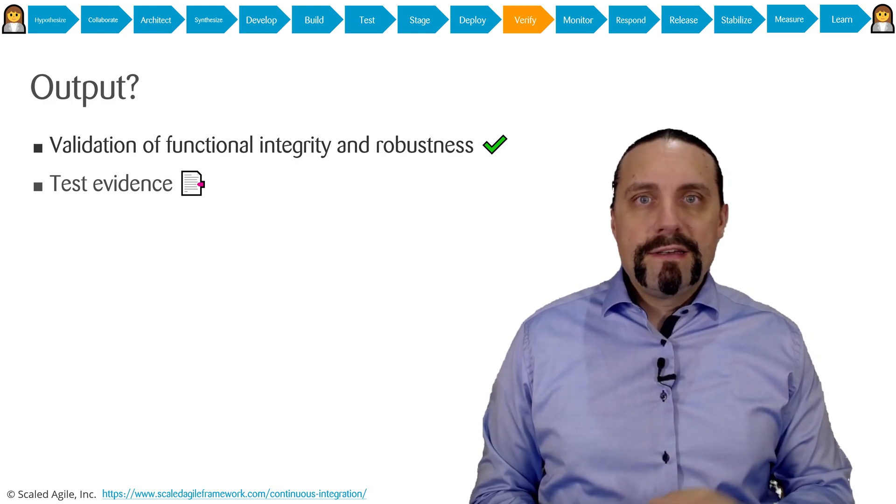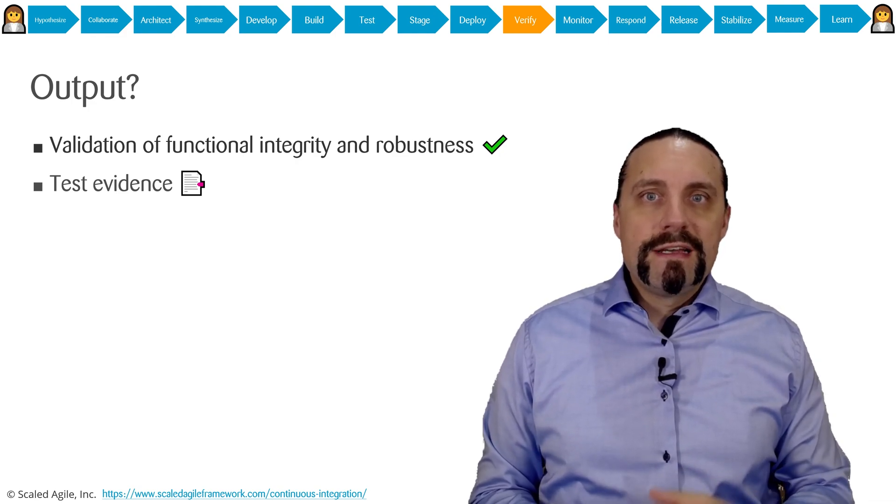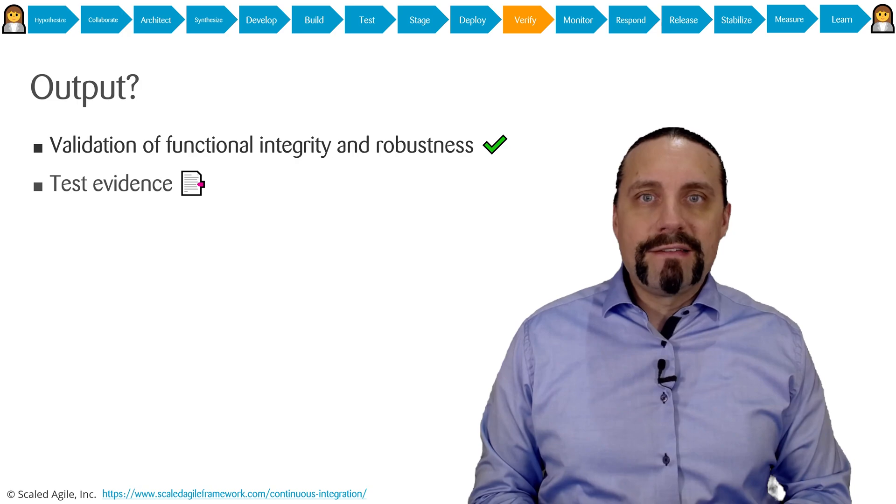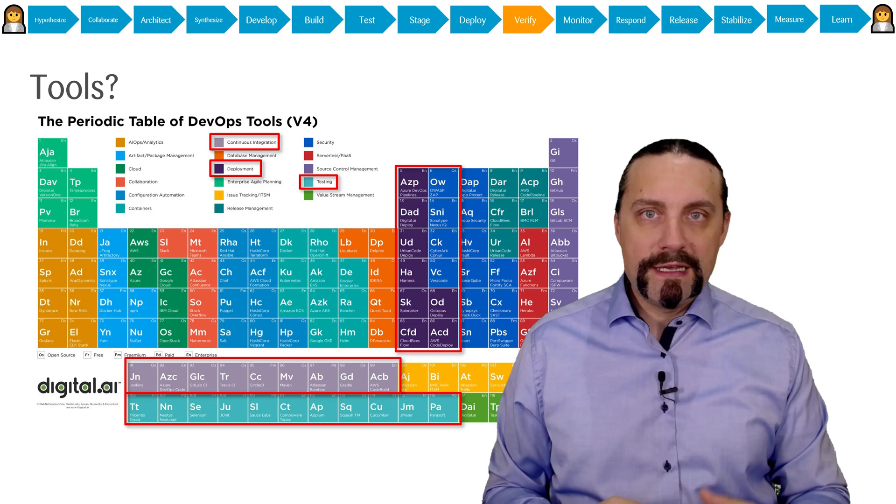We have now verified that the production is still working and our changes have not had a bad impact on the production. To verify the new functionality in production, function requirements, and the non-functional requirements, we have of course a big set of tools that we can use.